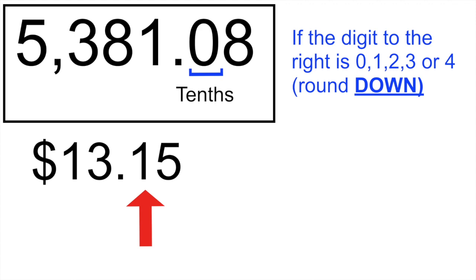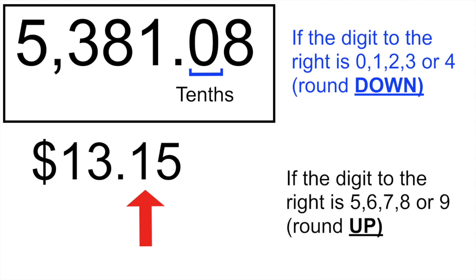If the digit is zero, one, two, three, or four, you would round down. And if the digit is five, six, seven, eight, or nine, you would round up.